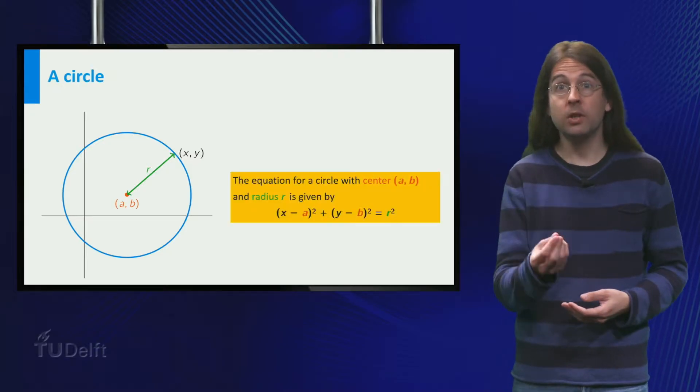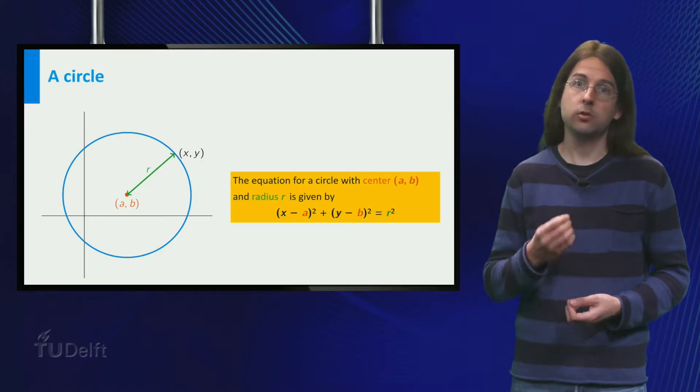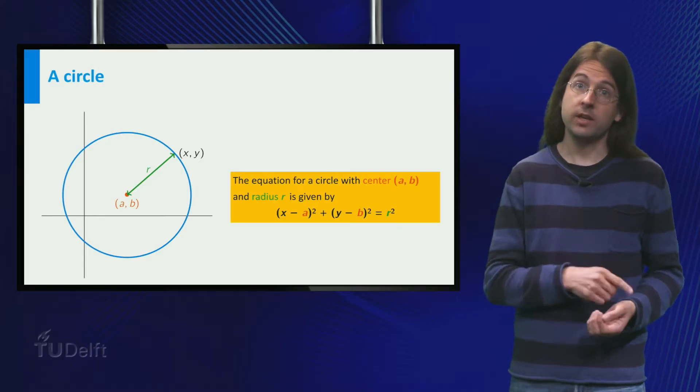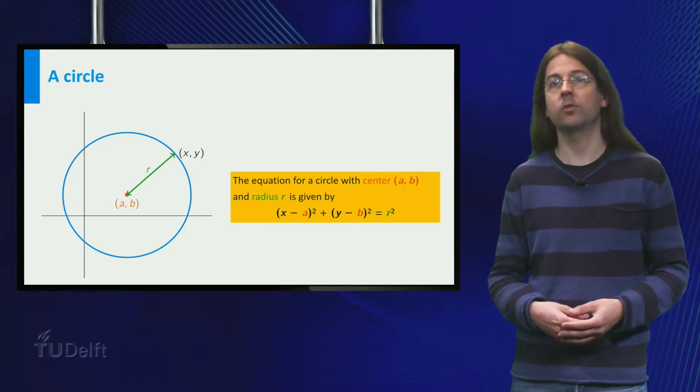In this formula you should realize that a, b and r are fixed and determine a circle, whereas x and y denote the coordinates of any one of the infinitely many points on the circle.